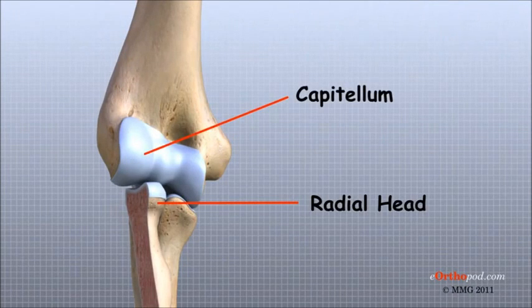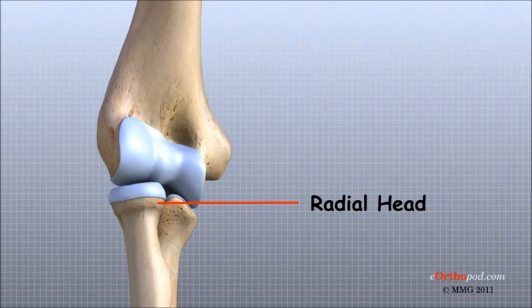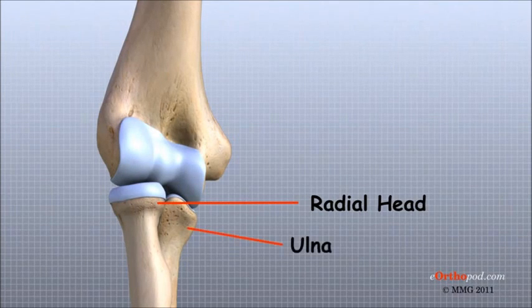A rounded knob at the end of the humerus that forms part of the elbow joint. The smooth rim of the radial head is also covered with articular cartilage and glides against a small indentation in the ulna.